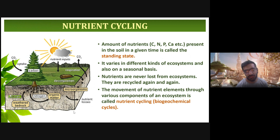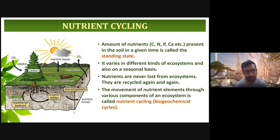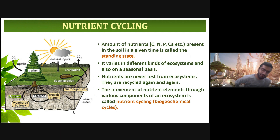The nutrient cycle: the amount of nutrients present in the soil at a given time is called the standing state. The nutrients in the soil — such as calcium, carbon, nitrogen, and phosphorus — vary in different ecosystems and also on a seasonal basis. The amount of nutrients in the Rajasthan desert differs from those in Kerala or Assam. On a seasonal basis, nutrients present in the soil in winter could be less than in summer.